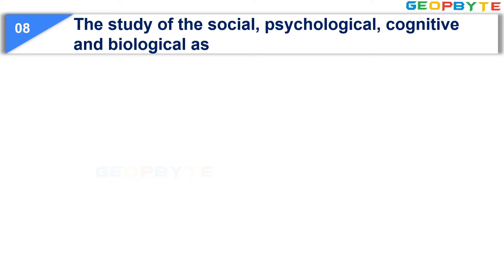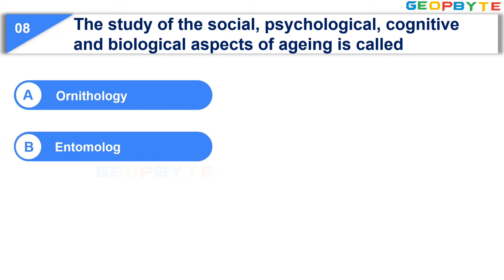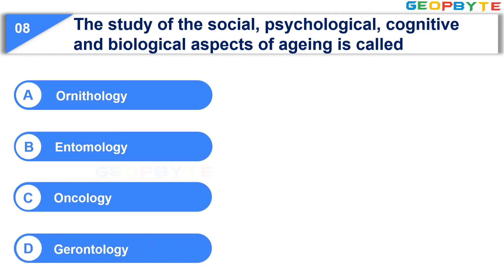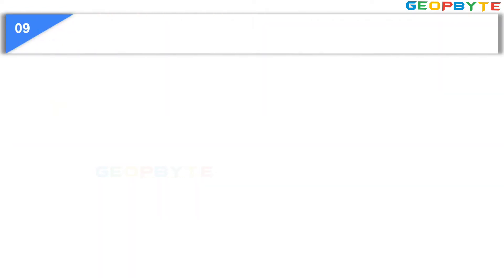Moving to the next question: The study of the social, psychological, cognitive and biological aspects of aging is called. Option A: Ornithology. Option B: Entomology. Option C: Oncology. Option D: Gerontology. Your time starts now. Your time is up and the correct answer is Option D: Gerontology.